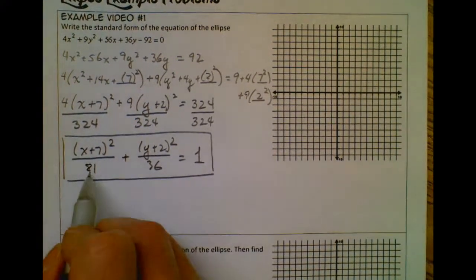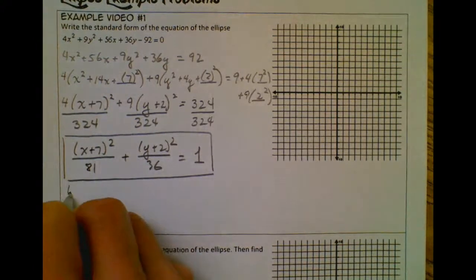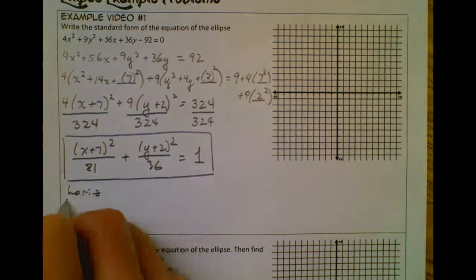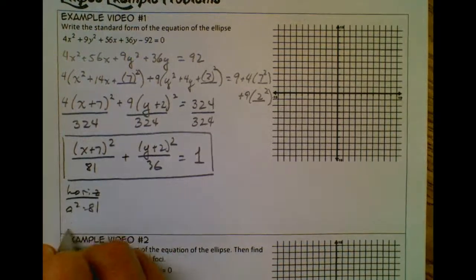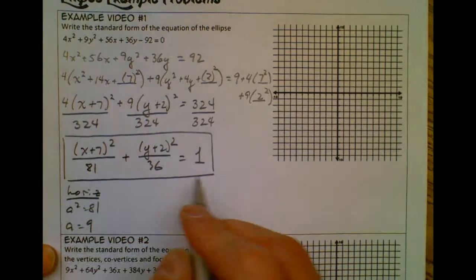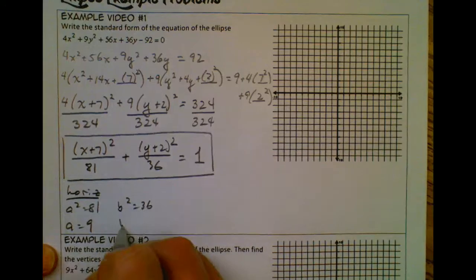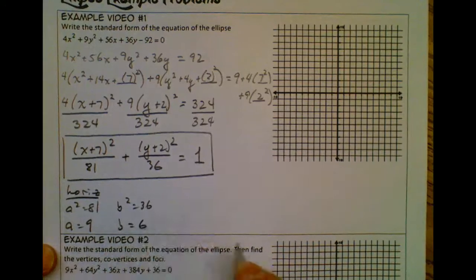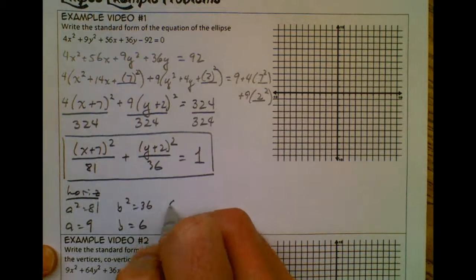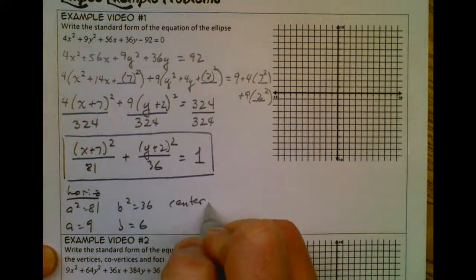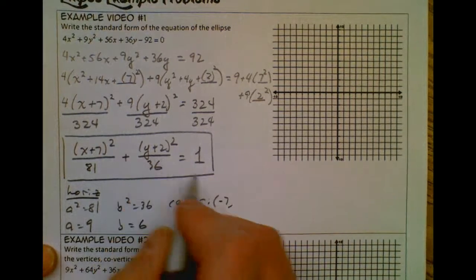Remember, a is always larger, so I know that a is going to be under the x term. So this one's going to be horizontal. And I know that a squared is 81, so that means that a is 9. And I know that b squared is 36, so that means that b is 6. And I also know that my center is hk, so it's going to be negative 7 and negative 2.